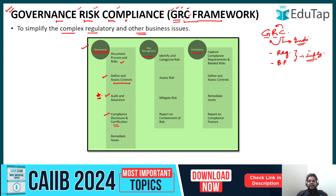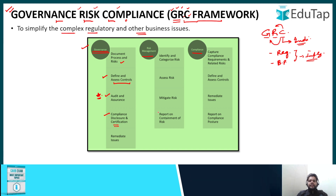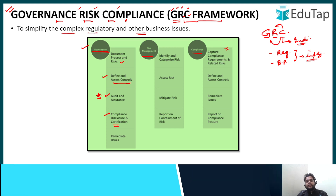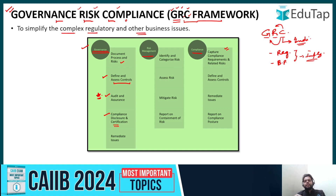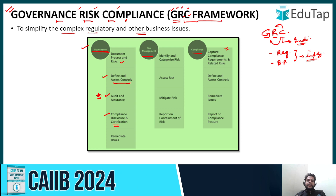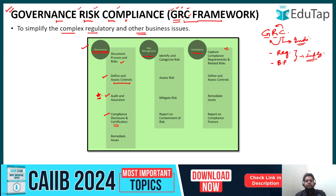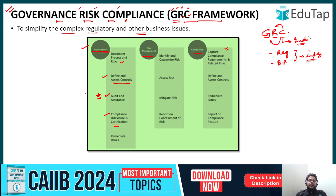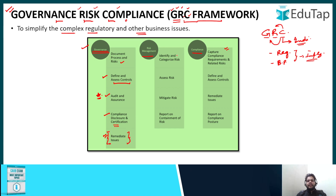Then, compliance disclosure and certification — the compliance disclosure falls under governance, while compliance requirements and related risks are discussed under the compliance section. For example, if a particular credit management case did not go well and RBI norms were not followed, then the disclosure of that case comes under governance, but the risks related to it remain in the compliance structure. Remediation of issues is also part of governance in the GRC framework.